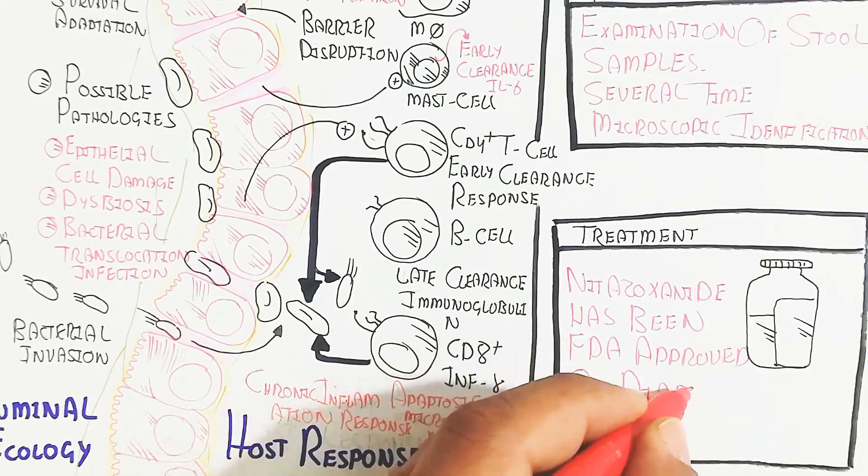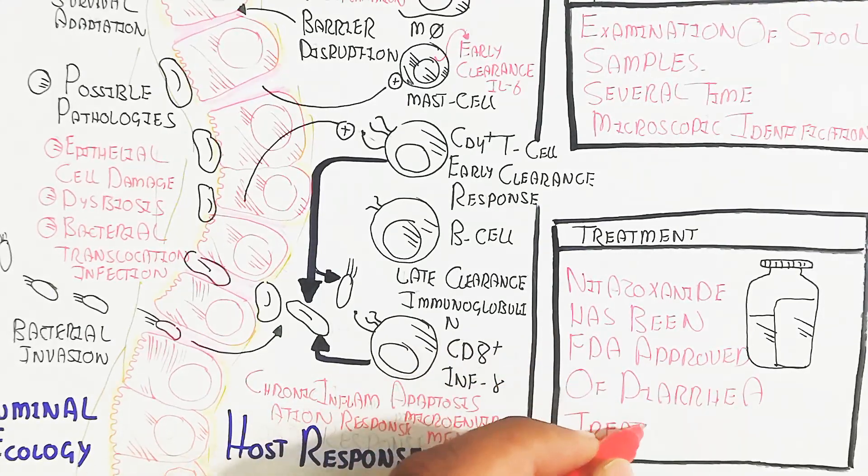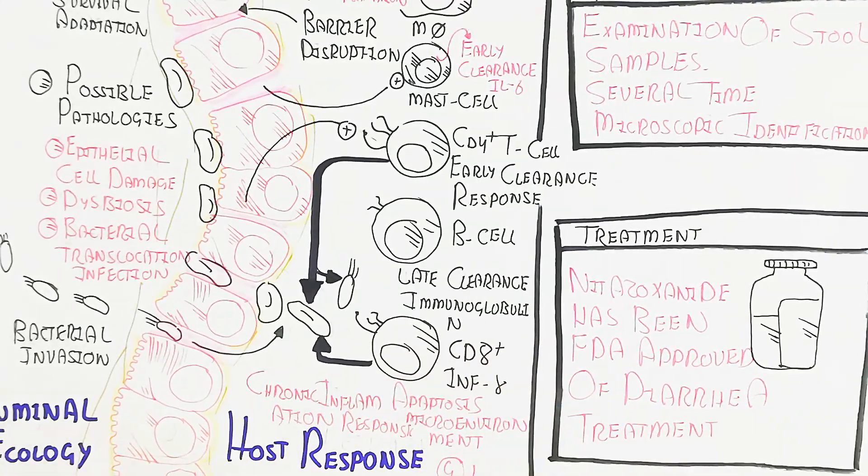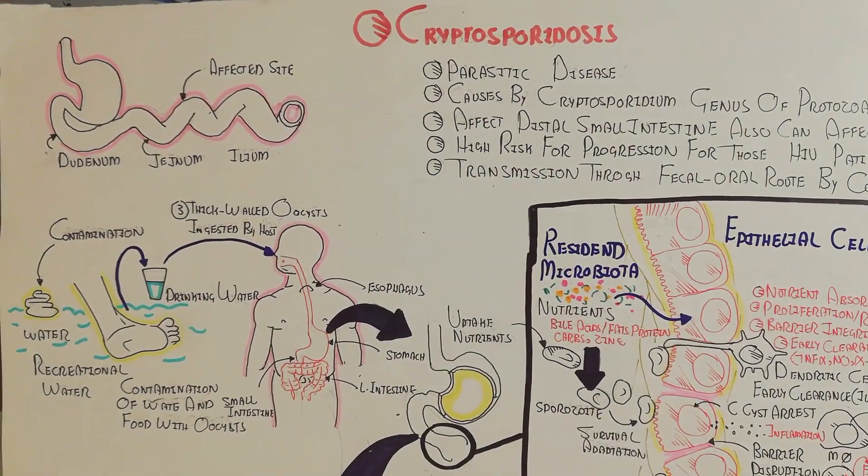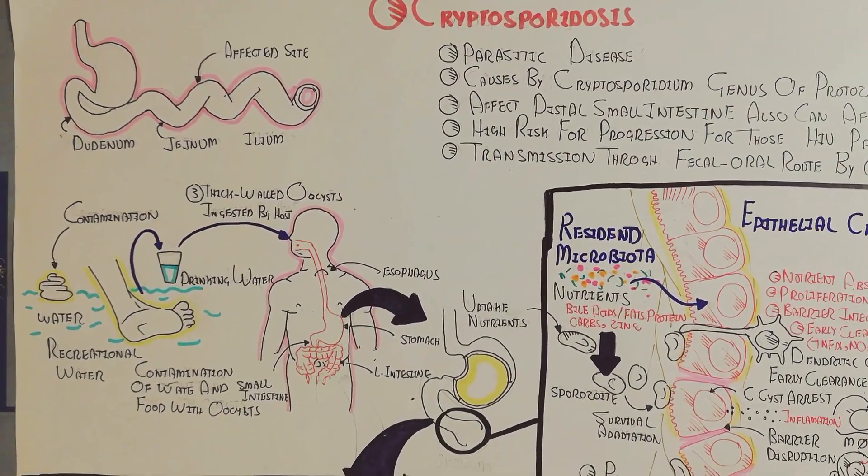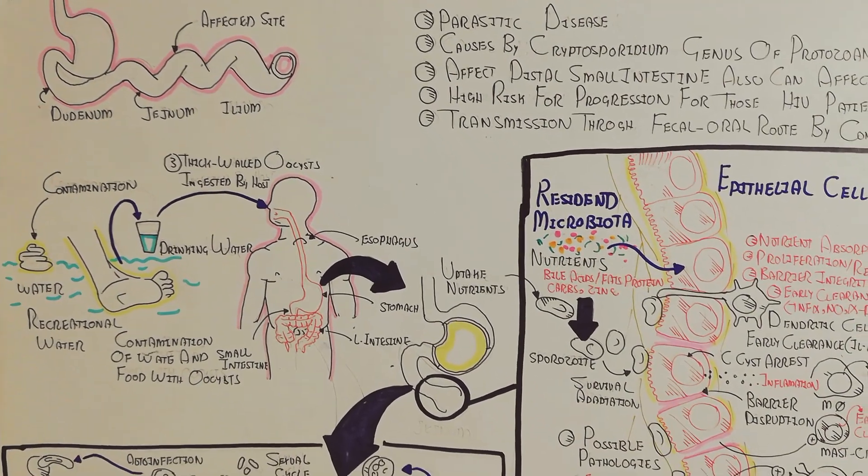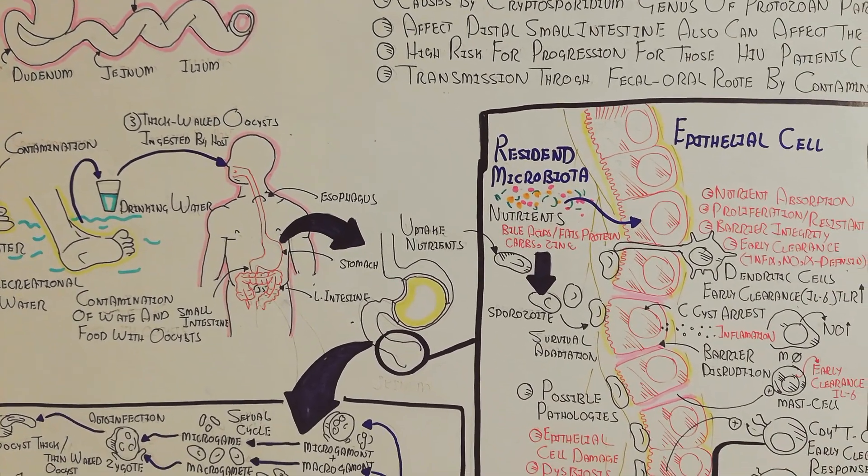Diarrhea is the major characteristic of cryptosporidosis. Cryptosporidosis is characterized by diarrhea, identified through stool analysis. I hope you understand this.